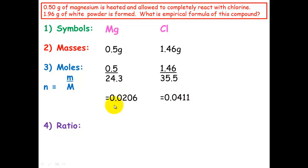Ratios, we just divide by the smallest number here. So magnesium will be divided by itself, which is 1. And chlorine is 0.0411 divided by 0.0206, which is 2. So our empirical formula will be magnesium, 1, and chlorine, 2.